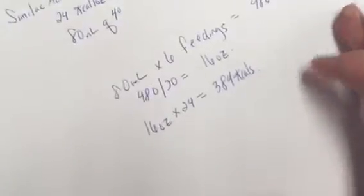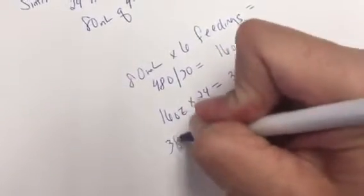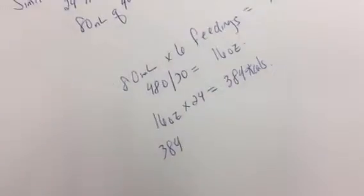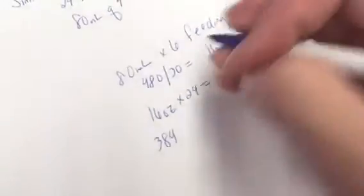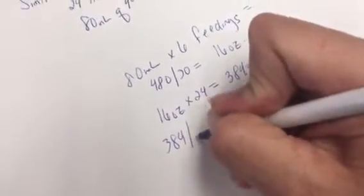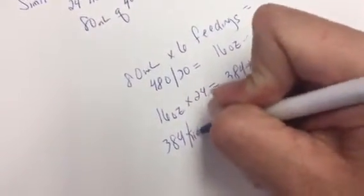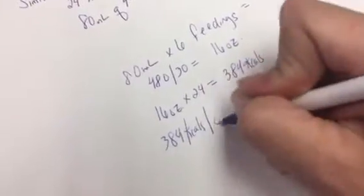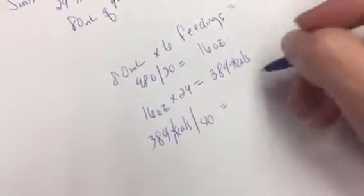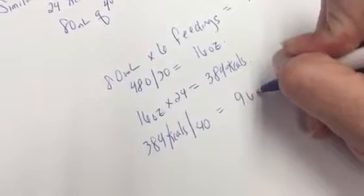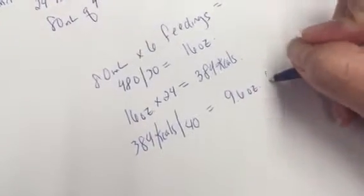Remember, formula concentrate uniformly is double the concentration of standard formula. It's 40 calories per ounce of concentrate. So 384 kcals divided by 40 calories per ounce means we need 9.6 ounces of concentrate.